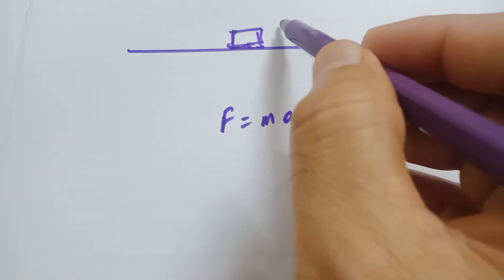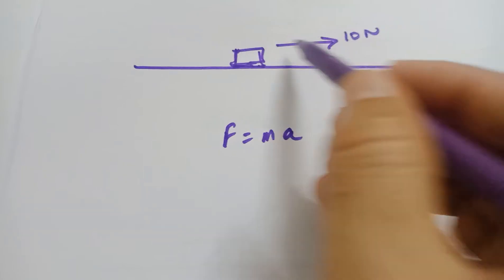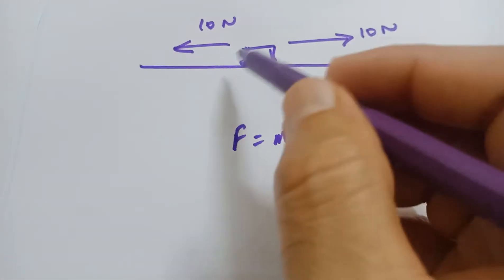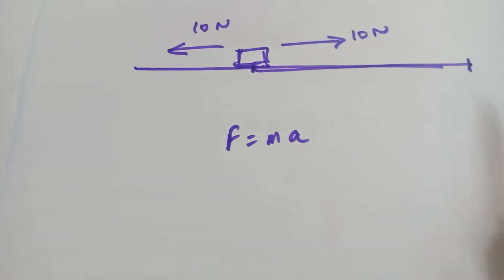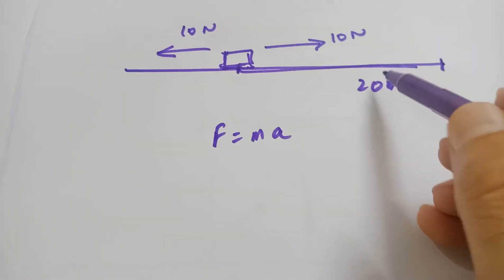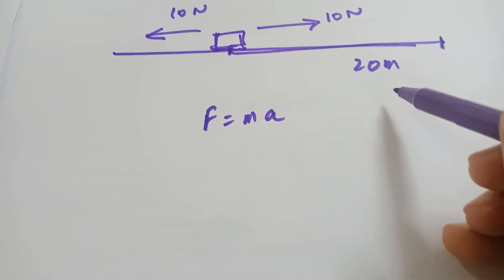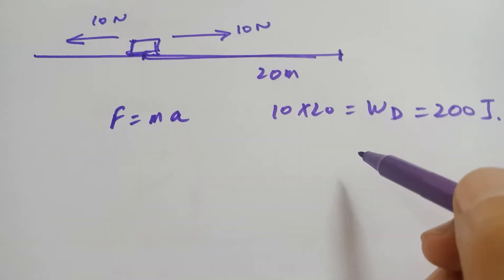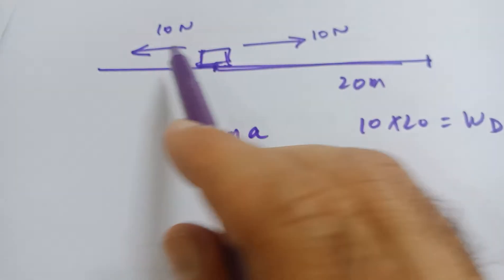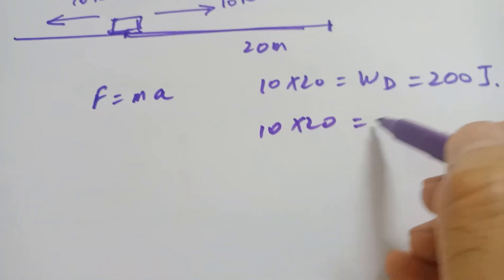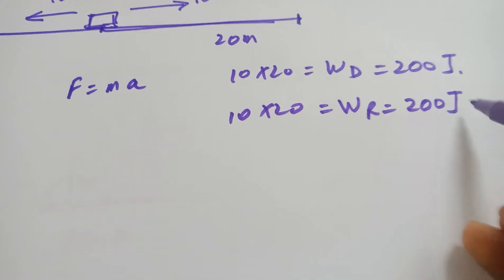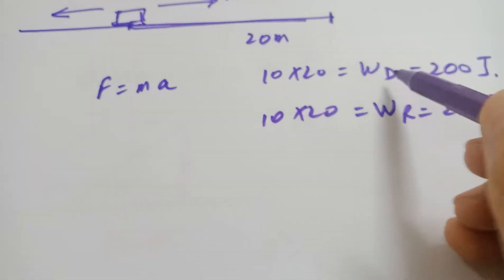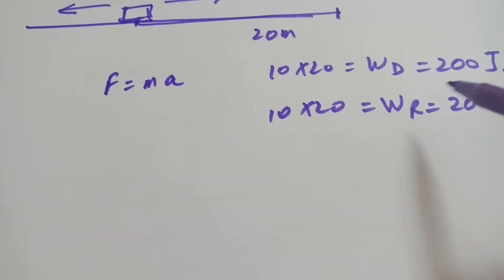For example, if there is a 10 Newton pulling force — the driving force — then there has to be a backward 10 Newton resisting force. Only then can the object be in a state of equilibrium. Now suppose it has covered a distance of 20 meters. The work done by the driving force is 10 × 20 = 200 Joules. The work done against the resisting force is also 10 × 20 = 200 Joules. So the net work done — the total work done — is 200 minus 200, which equals zero.